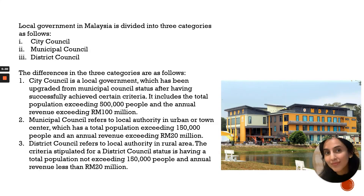The third category is the District Council, which refers to a local authority in rural areas. They have a population not more than 150,000 people and revenue less than 20 million. For example, in Perak, this is Majlis Daerah Perak Tengah — your ITM Sri Iskandar campus falls under Majlis Daerah Perak Tengah.